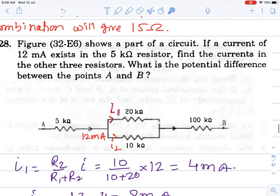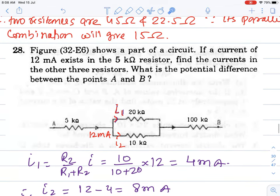Question 28: Figure shows part of a circuit. If current of 12 milliamperes exists in the 5 kilo-ohm resistor, find the currents in each and then potential difference.